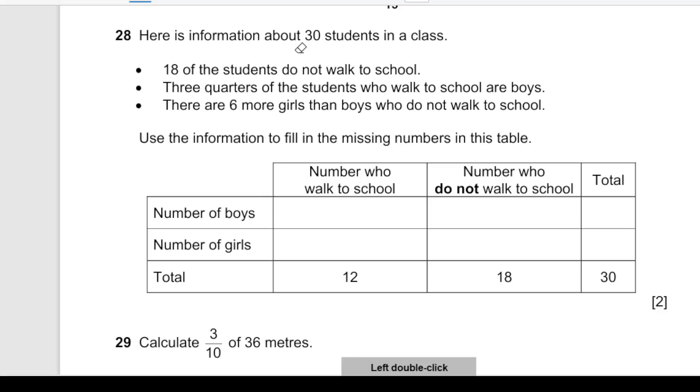Here is information about 30 students in a class. 18 of the students do not walk to school. Here we have those who walk to school and those who do not walk to school - the 18 is already filled in, so we do not need that.